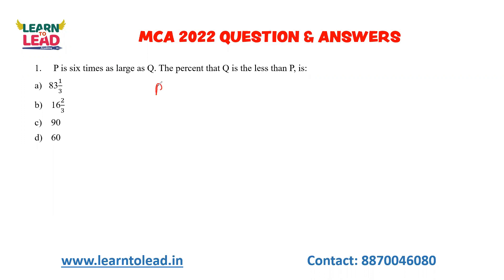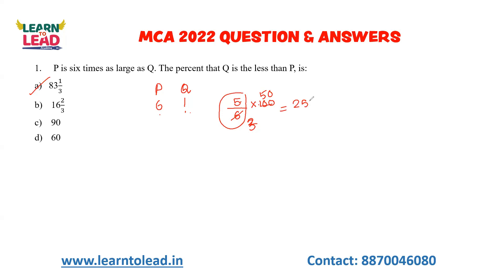P is 6 times as large as Q. So Q is 1 part and P is 6 parts. The question asks: by what percent is Q less than P? Q is less than P by 5 parts. 5 by 6 equals 83.33%. If you look at the question, within 2 to 5 seconds we can solve this. You need to know fraction-to-percentage and percentage-to-fraction conversion values; otherwise you will be confused.